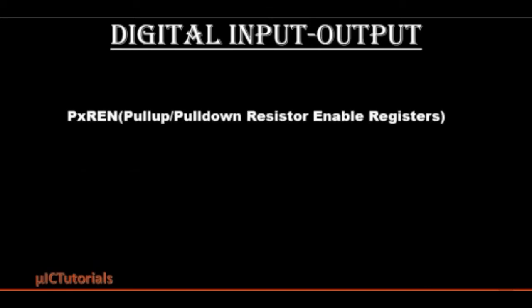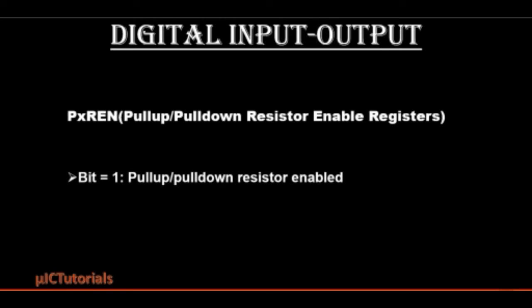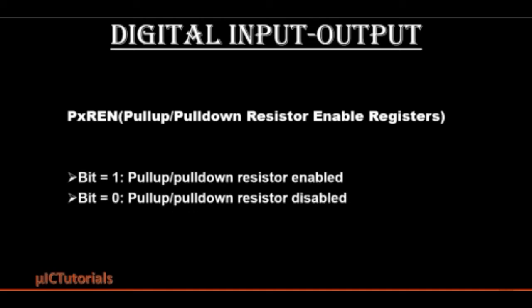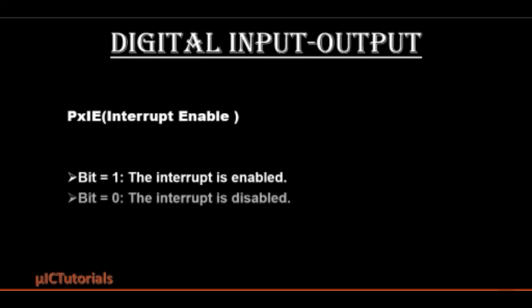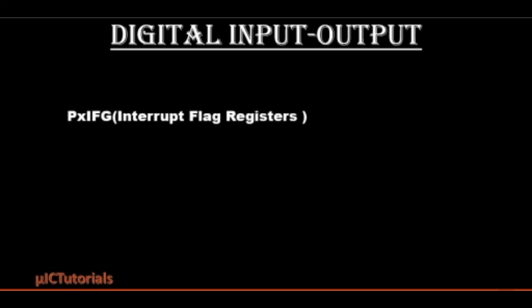The PXREN register enables or disables the internal pull-up/pull-down resistor. Writing a 1 will enable the corresponding port pin pull-up/pull-down resistor; writing a 0 will disable the corresponding port pin pull-up/pull-down resistor. The PXIE register enables or disables the interrupt. Writing a 1 will enable the corresponding port pin interrupt; writing a 0 will disable the corresponding port pin interrupt.